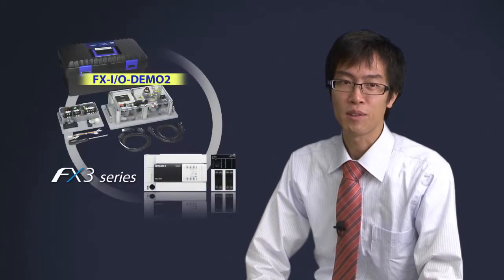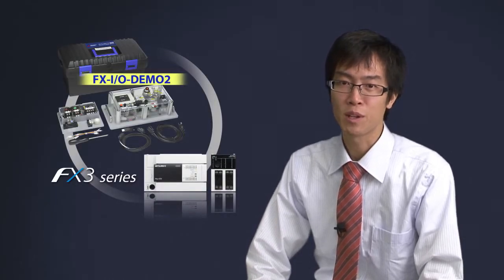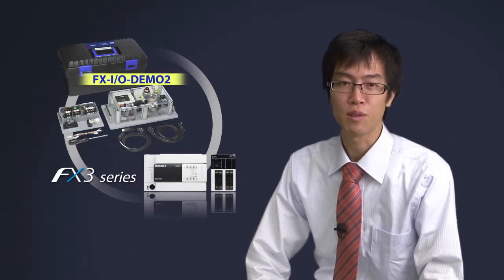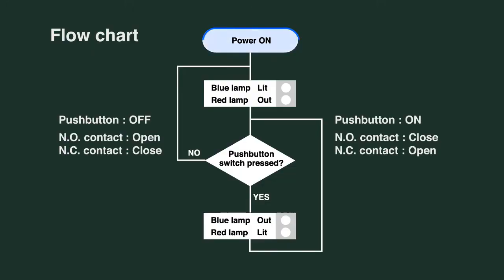Another type of representation, called the flowchart, is helpful when considering the overall series of operations. This flowchart shows that when the power is turned on, the blue light turns on and the red light turns off. Then, depending on whether the push button is on or off,